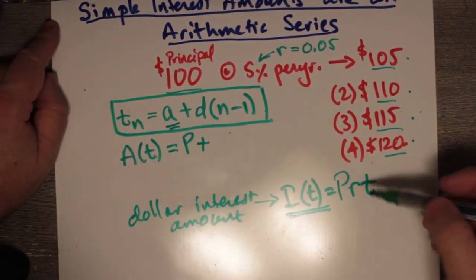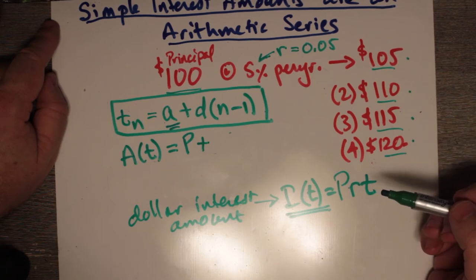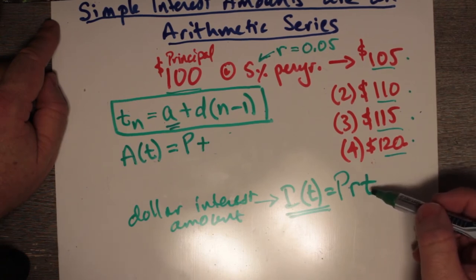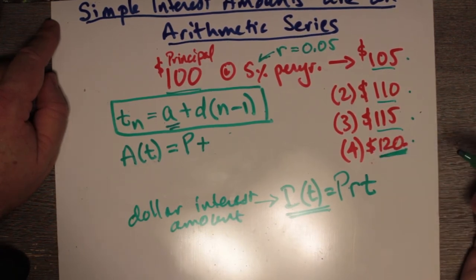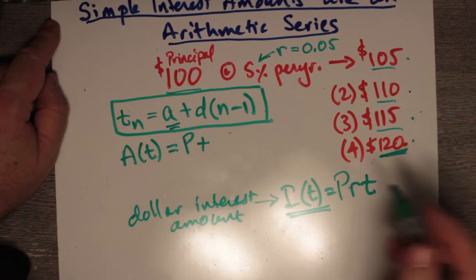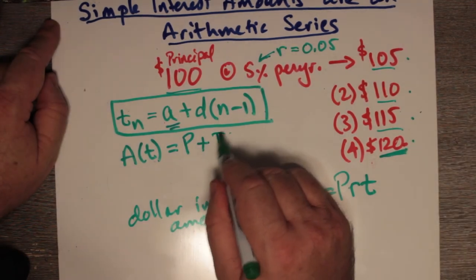And does that work? Well, P times R, we already know is 5, times time. So after 4 years, 5 times 4 will be 20. And indeed, we have 120 here, or $20 added to 100. So that means that we have to have I of T here.